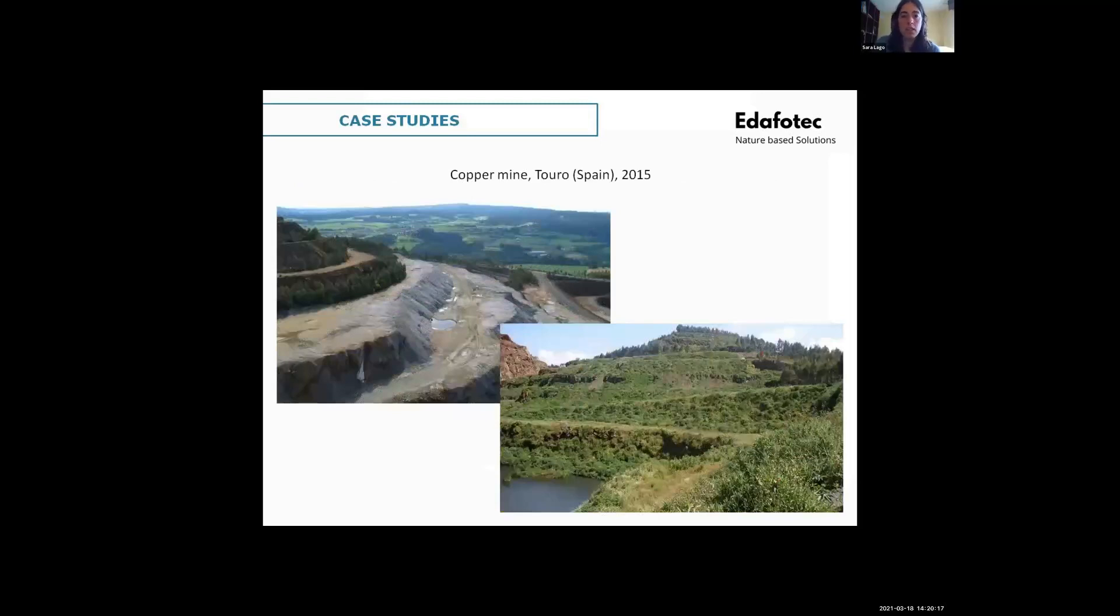And here, lastly, this is a copper mine also in Spain and you can see the difference before the application of artificial soils and after the application. And you can see that it looks more like a natural landscape. And also it was restored. It had previously a low pH range values. And now it stabilized and the pH is in an optimum range.